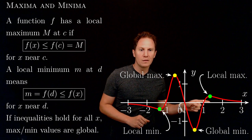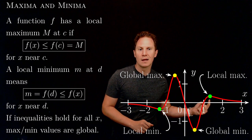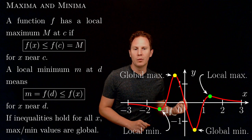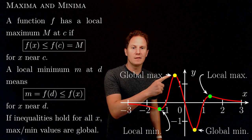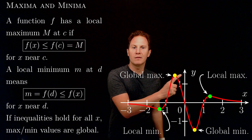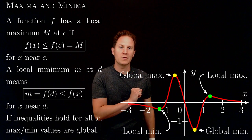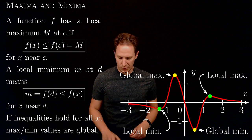As you can see it has lowest and highest values both locally and globally. So at this point along the x-axis it attains a local maximum but this is not the highest, the largest value it can take. This is the largest value it can take and so this is the global maximum for this function and similarly for the minimum values.